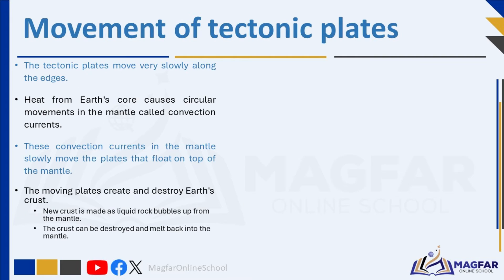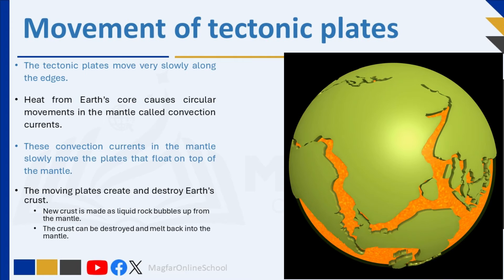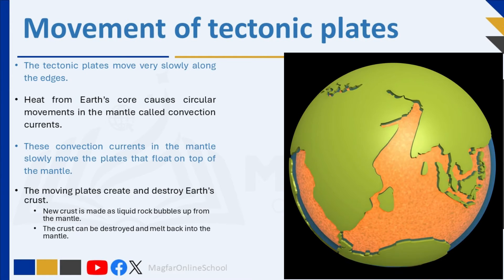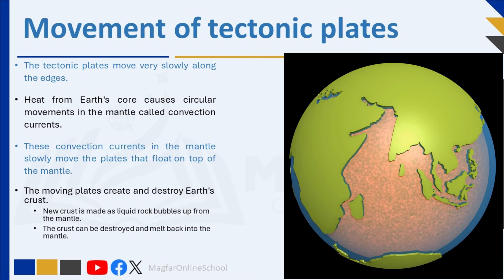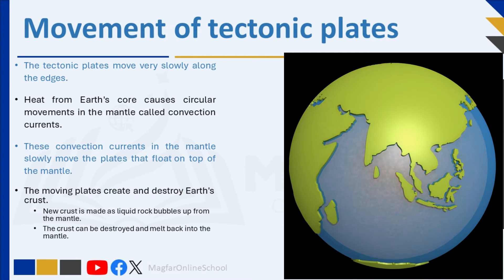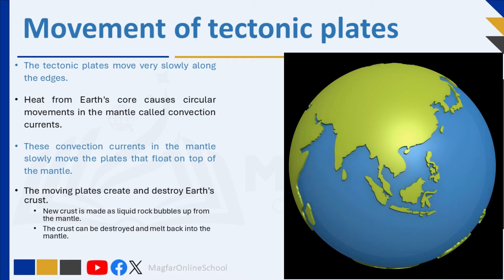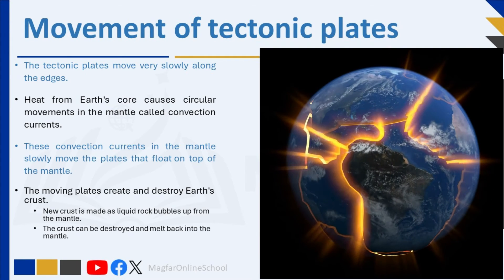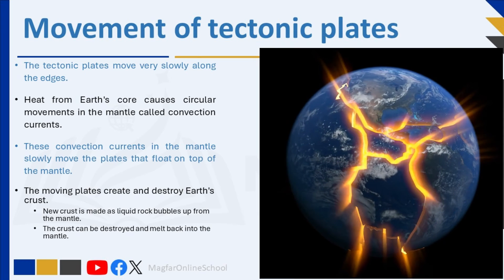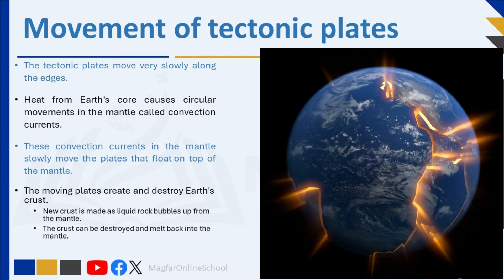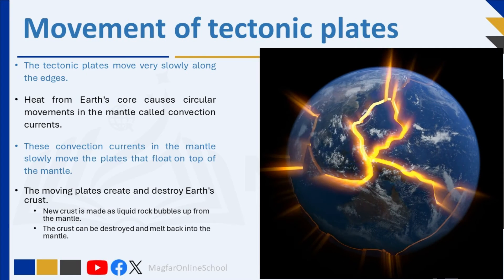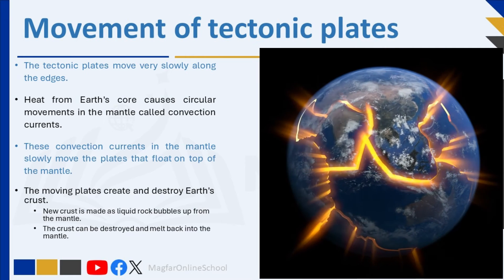The tectonic plates move very slowly along the edges. These edges are called the plate margins or plate boundaries. Tectonic plates move at about the same speed that your fingernails grow — that's almost 3 cm a year. In geological time, that is very fast. Over millions of years, tectonic plate movements have a huge impact on Earth's surface, shaping continents, mountains, and even causing earthquakes and volcanoes.